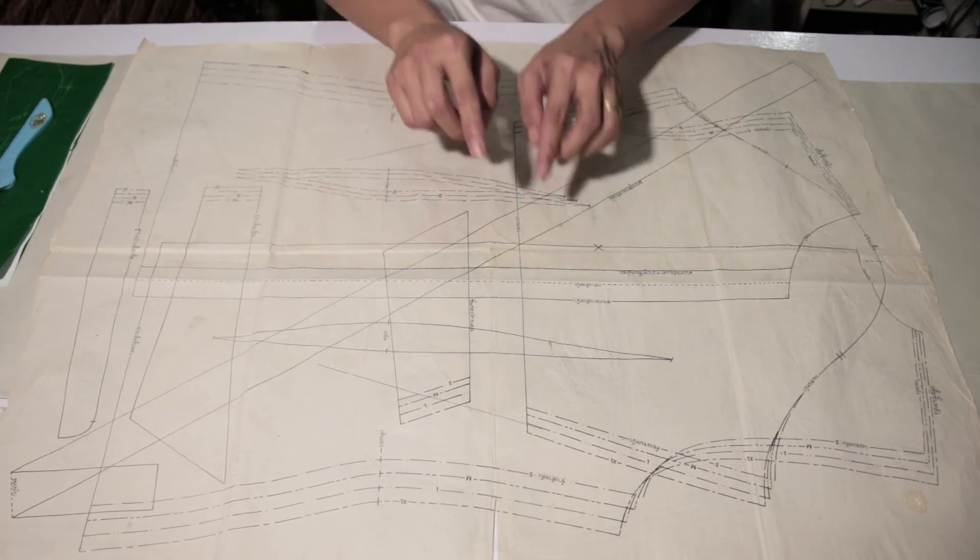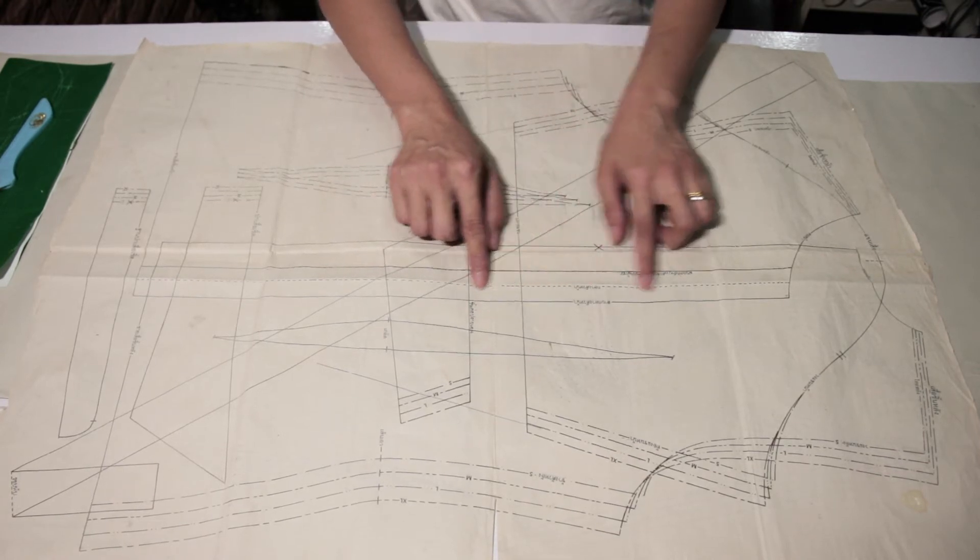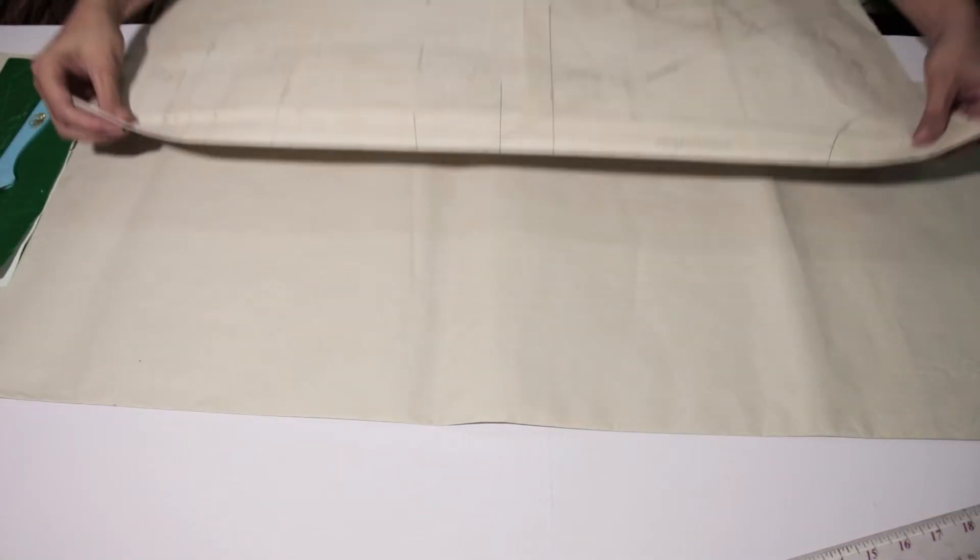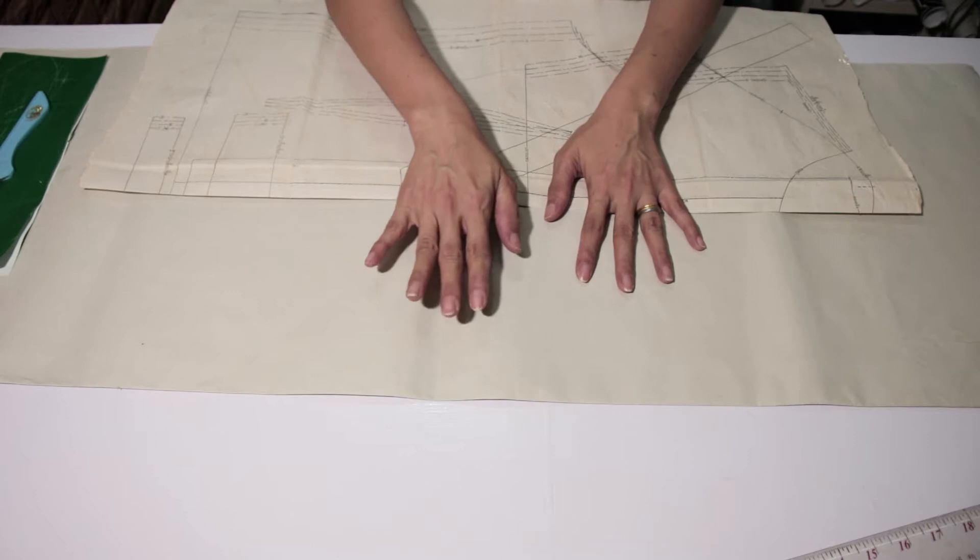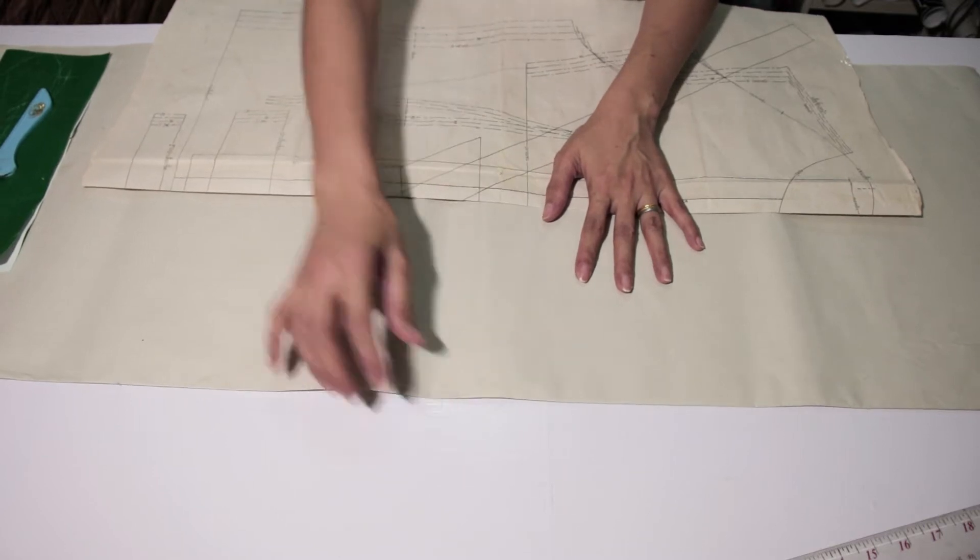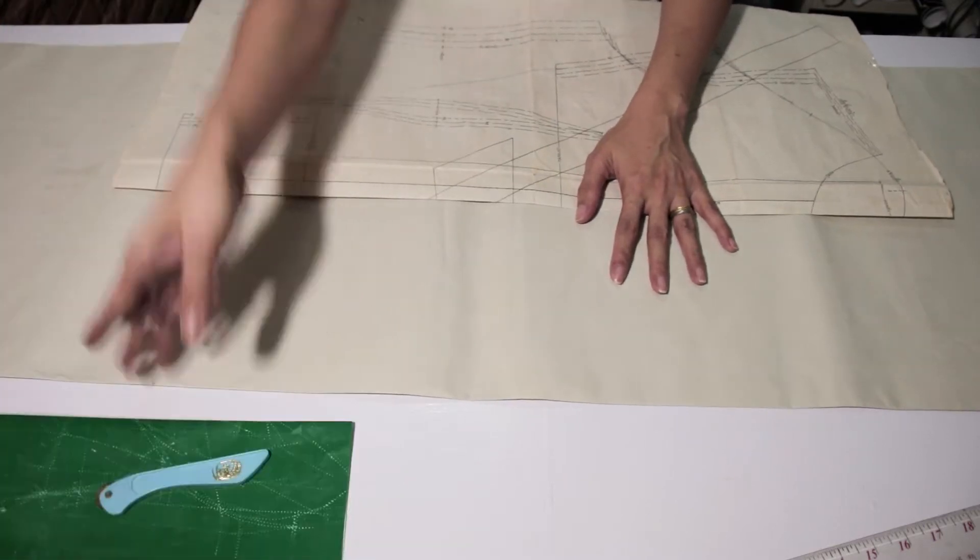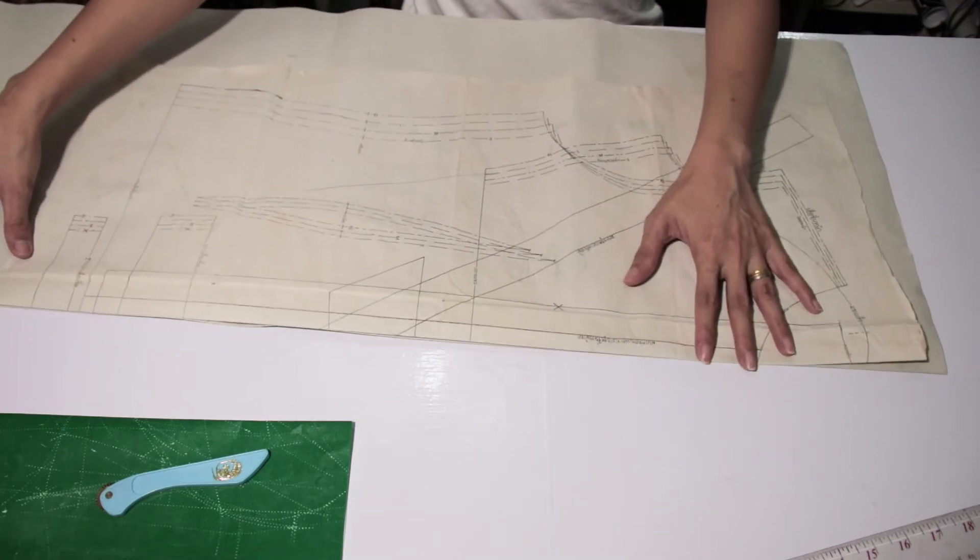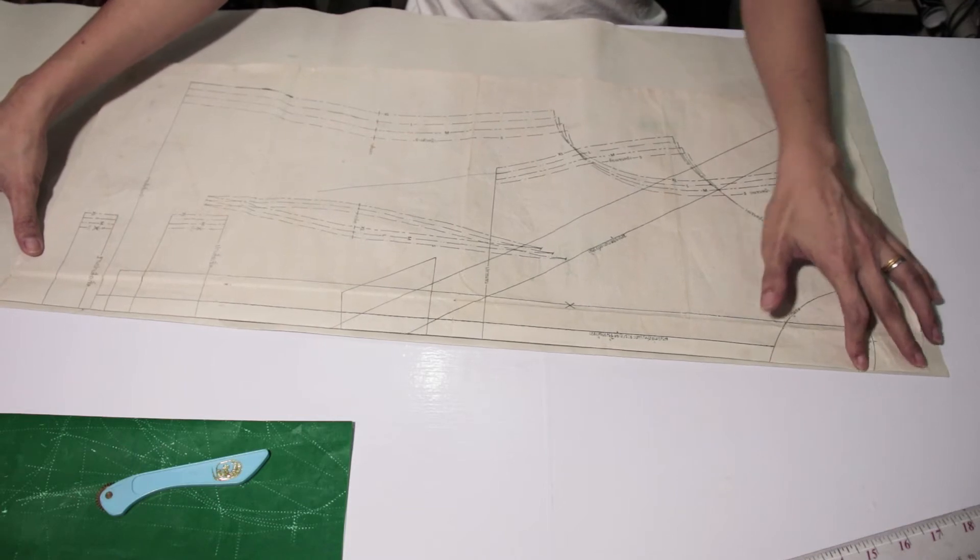And we're going to do the front part first. What we're going to do is we're going to find the middle line of the pattern. Here's mine. And then we're going to fold it in half like this. And also you want to fold your paper in half too, like this.